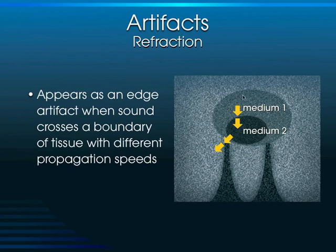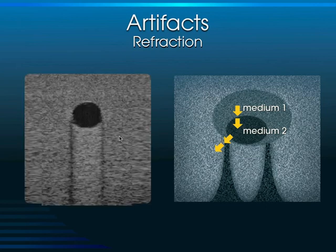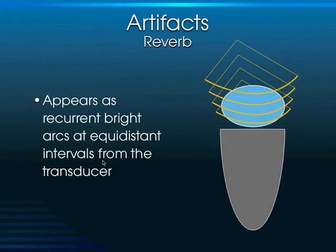Refraction occurs when sound passes between two media of different densities and gets redirected — similar to Snell's law, like a pencil in a glass of water. This creates shadows along the edges of organs. This is sometimes called lateral cystic shadowing, because a cystic structure has lower density than surrounding tissue and exhibits refraction artifact along its edges.